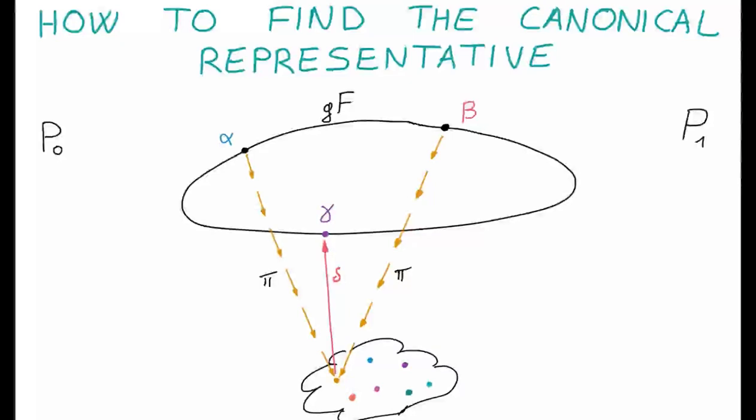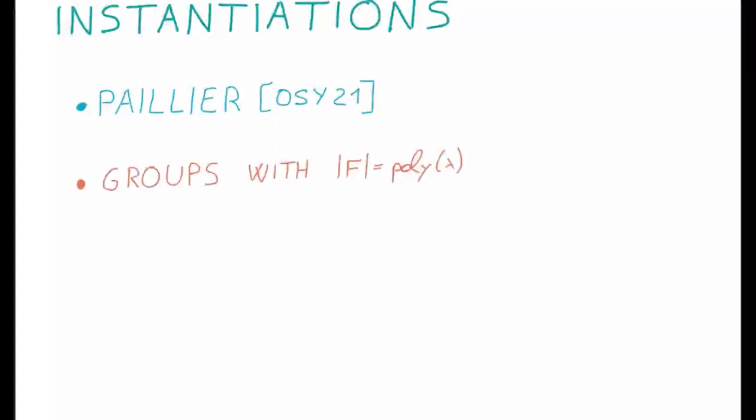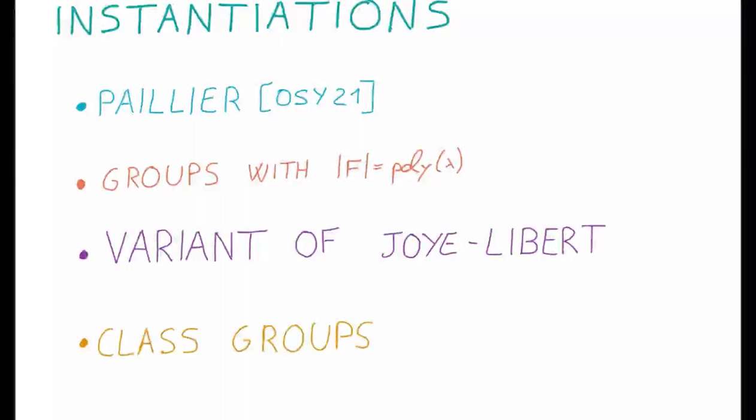Now, the question is, how many groups have coset labeling functions and lifting functions? Well, we came up with instantiations. The first one is Paillier, as it was already known since Eurocrypt 2021. The second one are groups in which F is small, namely polynomial size. Then we have variants of Joye-Libert, and finally we have class groups. The first three instantiations still need trusted setups to build public key PCFs and homomorphic secret sharing, but the good thing is that the last one doesn't.